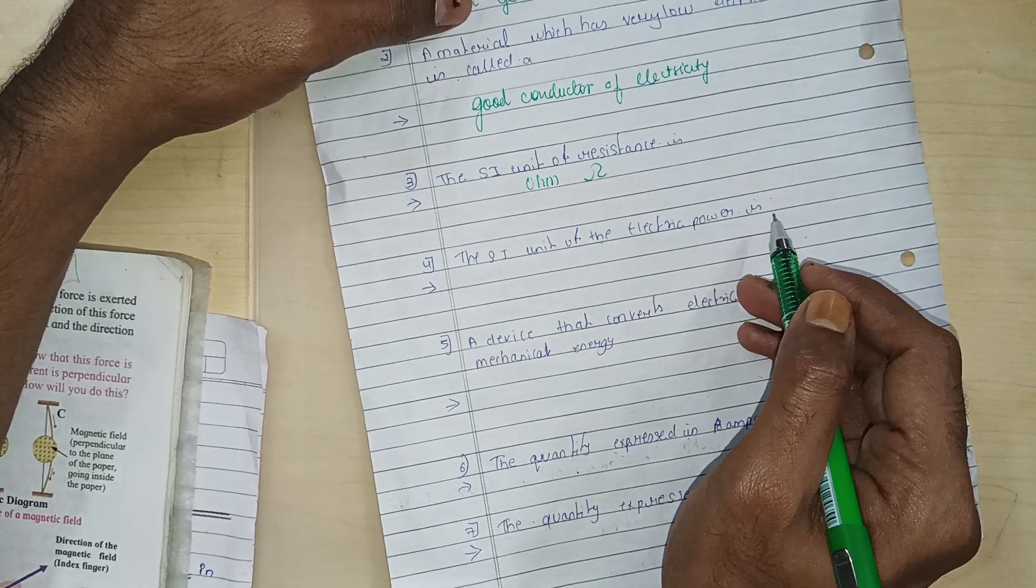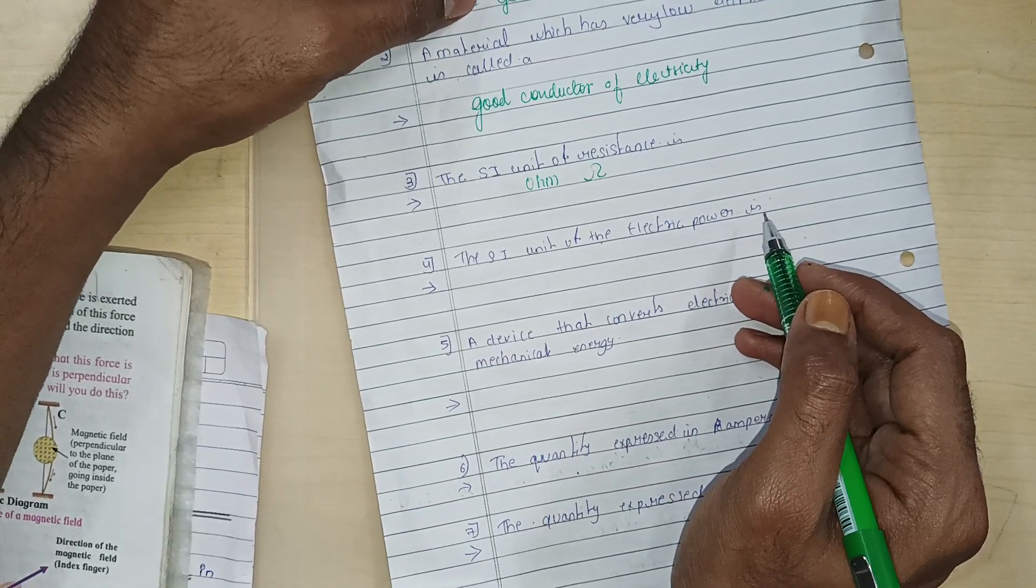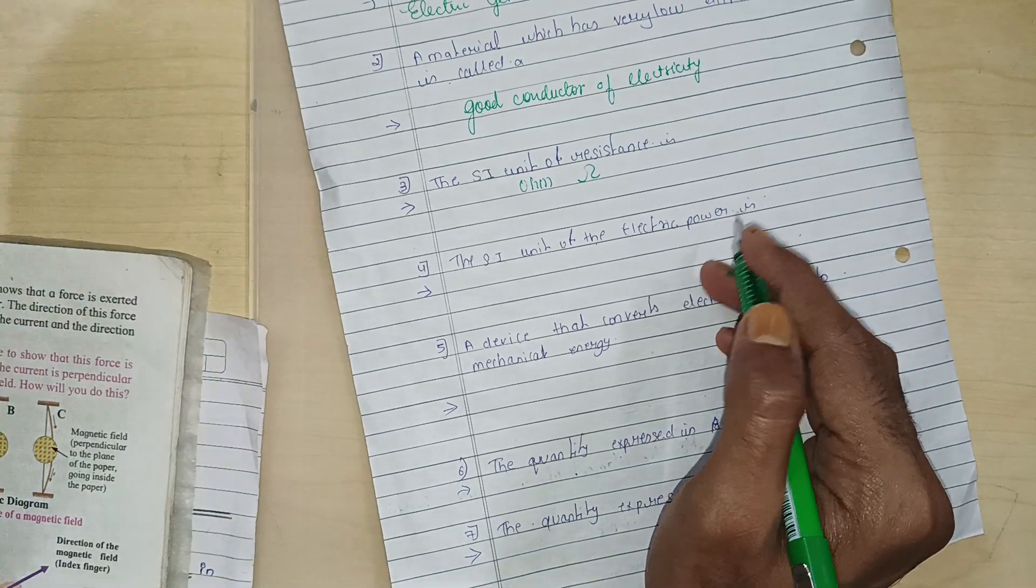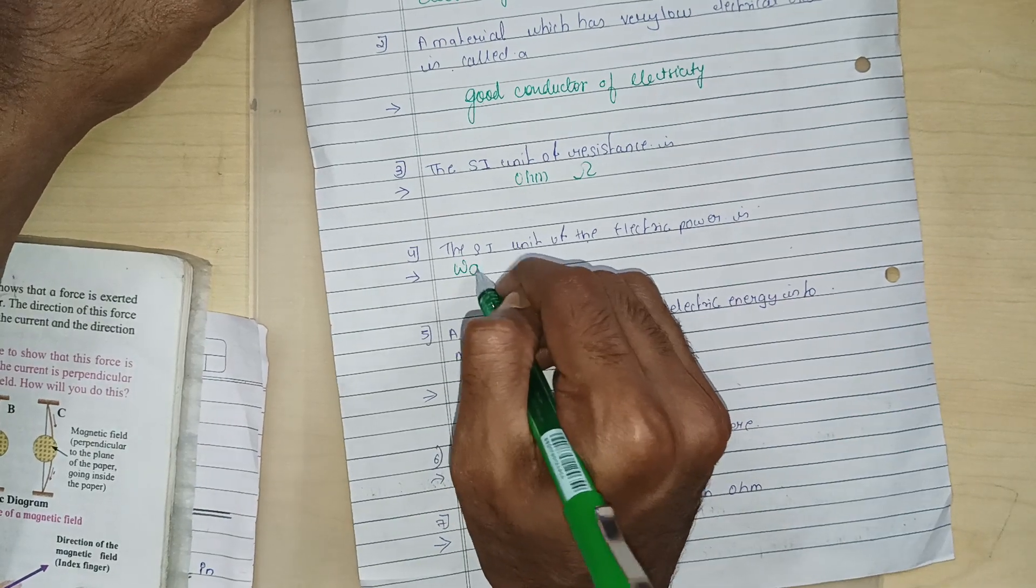The SI unit of electric power is what? What is the unit of electric power? Watt, W-A-T-T. All right? The SI unit of electric power is watt.